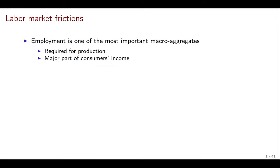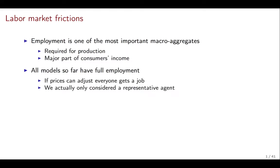The key here is to think about labor market frictions. Employment is one of the most important macro aggregates. We've seen in all the models we've reviewed that it is required for production and it is a major part of consumers' income. However, all models so far have full employment — that is, if prices can adjust, everybody gets a job.